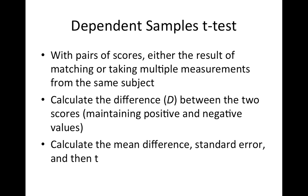A dependent sample t-test is the preferred mode of operation here. It turns out that if we take the difference between pairs of scores — either the result of matching or taking multiple measurements from the same subject — the difference in scores divided by the standard error of the differences is distributed as a t-statistic. Our friendly t-distribution comes to our aid. So this is a very easy test to do. All we have to do is calculate the mean difference, the standard error, and then the t.